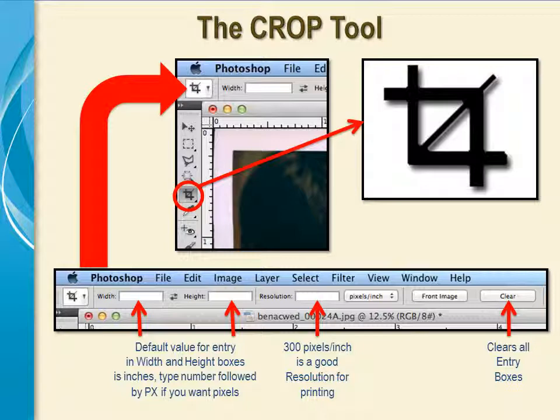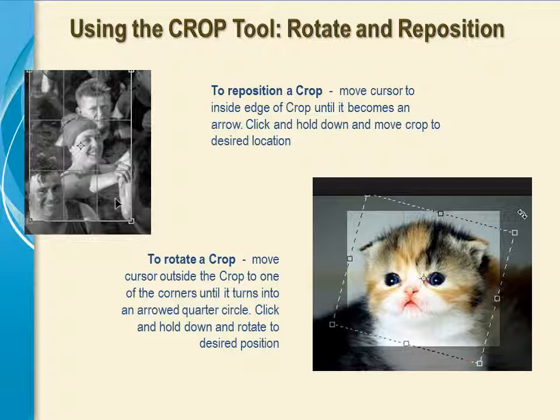Once you are done cropping, if you click on the Clear box, the boxes will empty out and you can enter new parameters for your next crop. Once the crop tool is selected, you can enter values for the size and resolution in the parameters bar at the top left. The default measurement is in inches; if you want pixels, type px after the value you have entered. Then drag the portion of the picture from the upper left to the lower right. The area not in the crop will darken and the crop area will retain the original brightness.